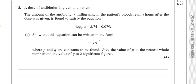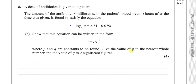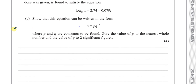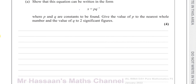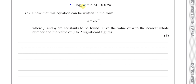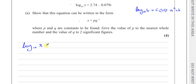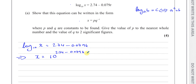We can do this in two ways: we could start from the logarithm form or from the index form — either is perfectly acceptable. Starting from the log form, we know that log base a of b equals c can be rewritten as a to the power of c equals b. So log base 10 of x equals 2.74 minus 0.079t can be written as x equals 10 to the power of 2.74 minus 0.079t.